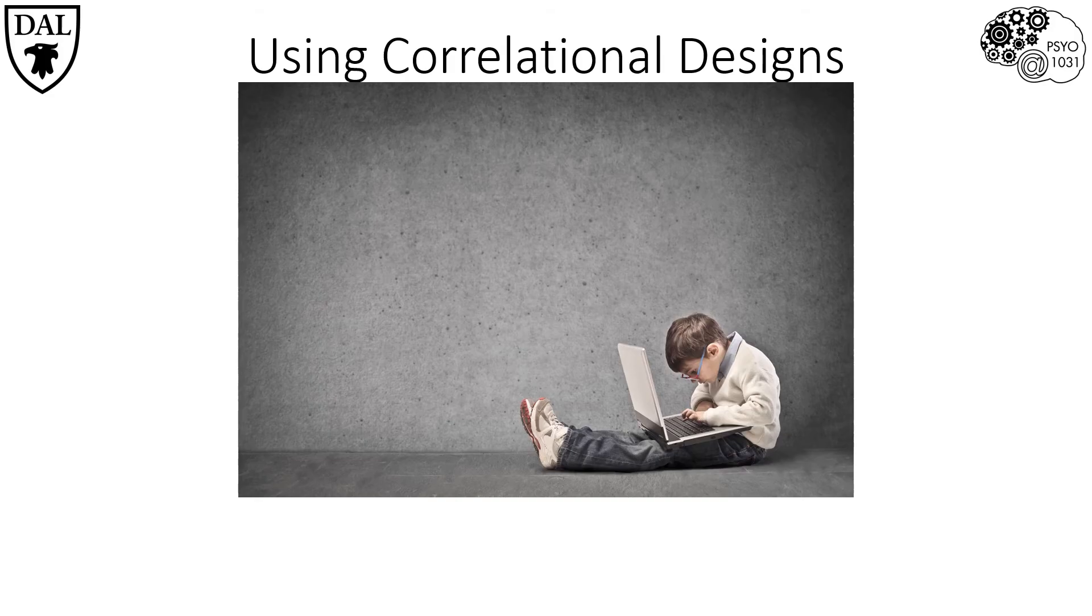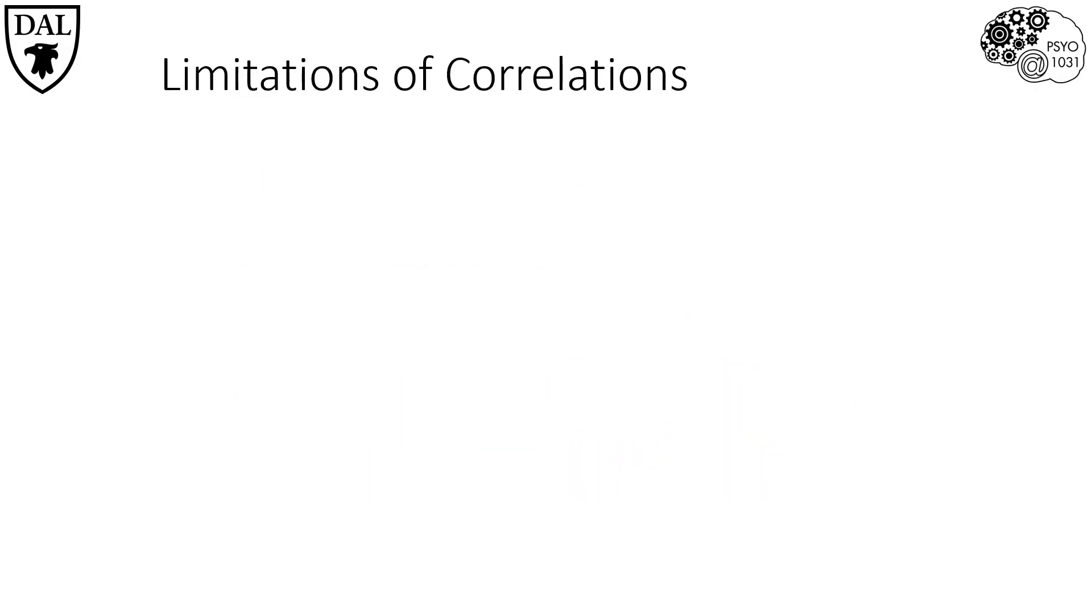Of course, it is also for these reasons the correlational designs come with limitations. The biggest limitation of correlational designs is that they cannot determine causality. One reason for this is the directionality problem, meaning it's not possible to tell the direction of causation.